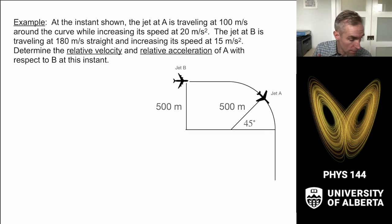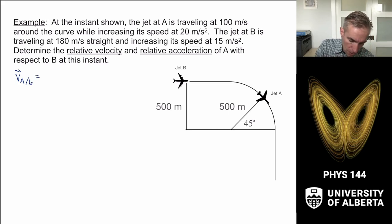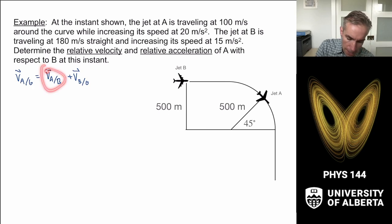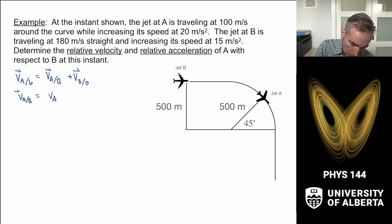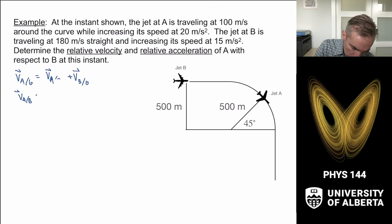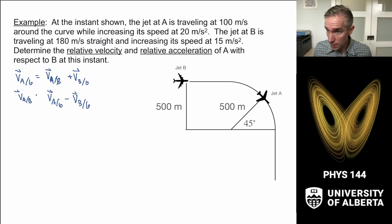I'll write down the relative velocity formula. The velocity of A with respect to the ground equals the velocity of A with respect to B plus the velocity of B with respect to the ground. What we care about is the velocity of A with respect to B. So the velocity of A with respect to B is the velocity of A with respect to the ground minus the velocity of B with respect to the ground.